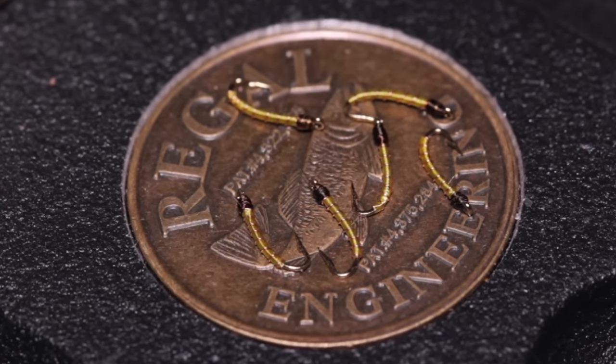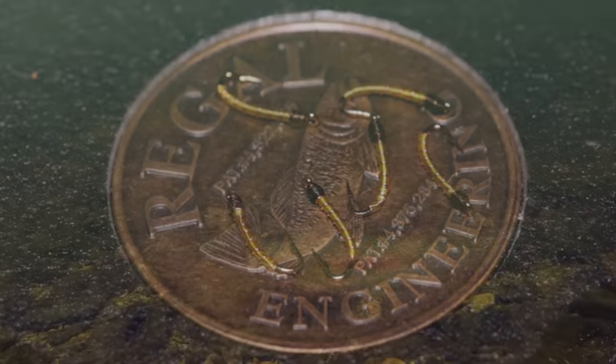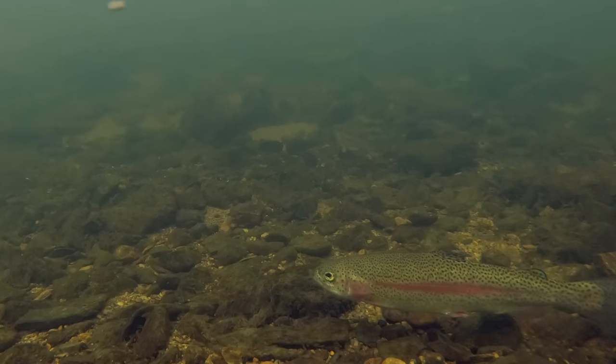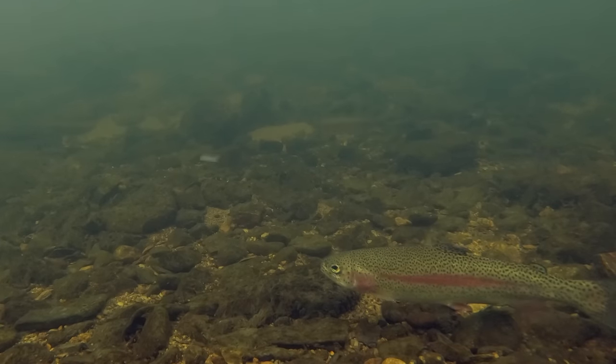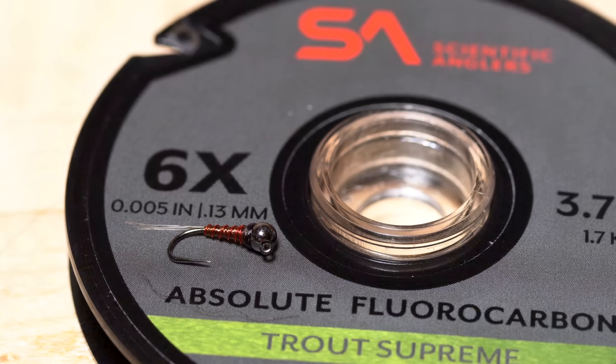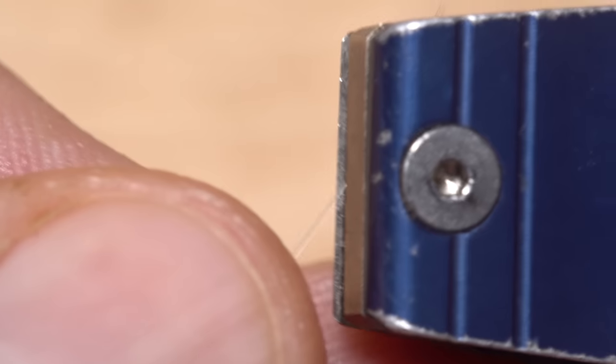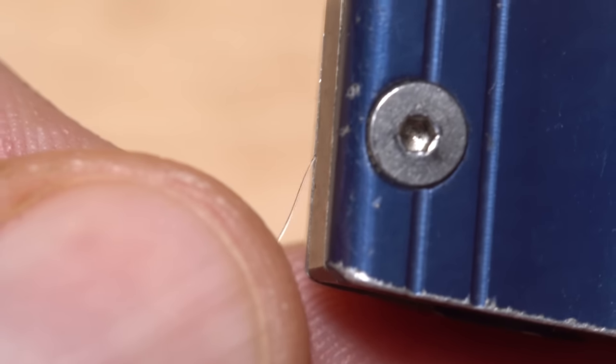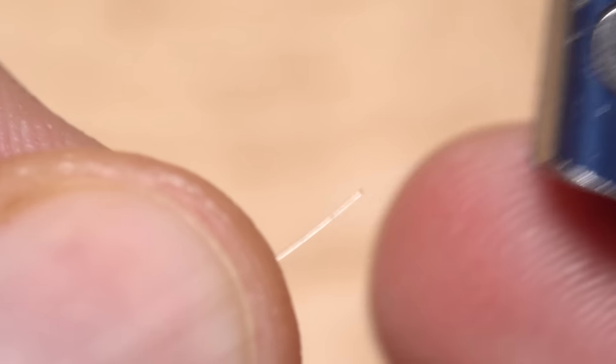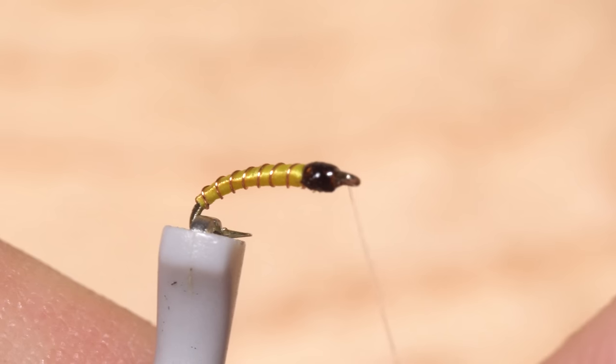Trout often feed on midge larvae close to the stream bottom, so I'll use a tandem rig with something like a heavy euro jig tied in first on, say, 6x tippet, then 12 to 18 inches of smaller tippet, such as 7x, going back to the midge larva. One thing I've found with small tippet is that using sharp nippers to cut it at a shallow angle definitely helps to get the tippet fed through the minuscule eye of the hook.